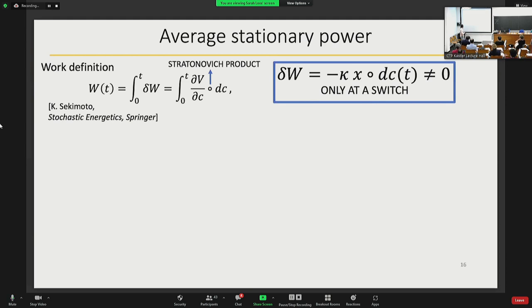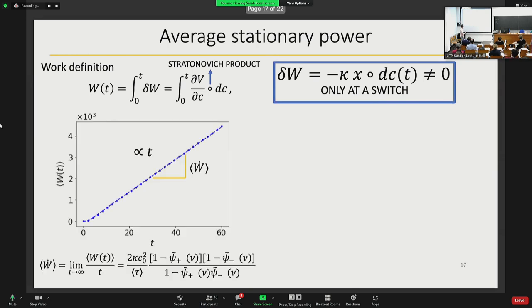Finally we want to characterize the energetics of this type of system. We do this by studying the statistics of the work. Here the work is calculated as the variation of the energy with respect to our external parameter, which is c, the center of the potential. The contribution to the work comes only when the variation of the process is non-zero, which means that this happens only in correspondence of a switch. This allows us to simplify the calculation. Once again we can calculate the average work. As you can see, this average work scales linearly in time because of a large deviation principle.